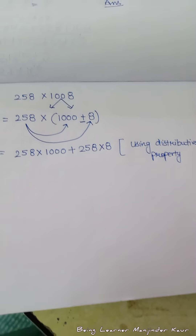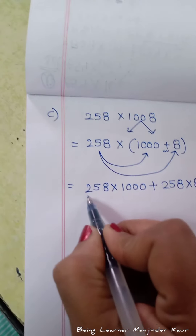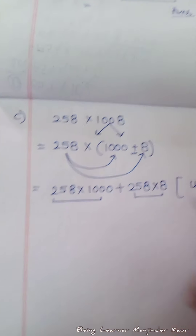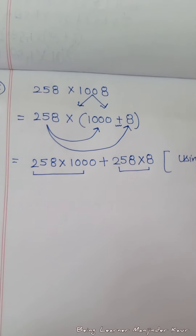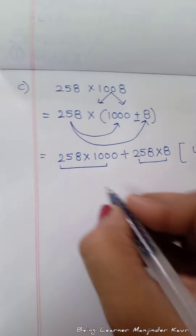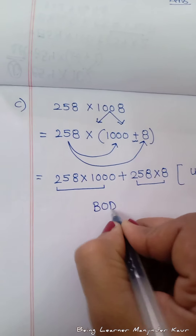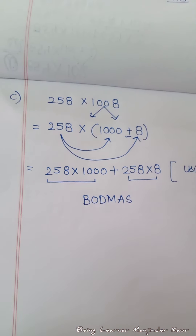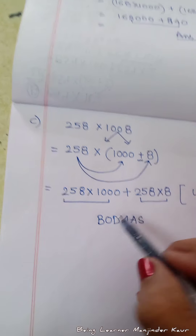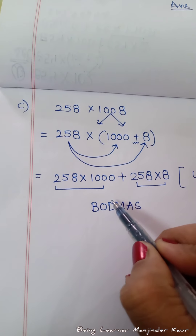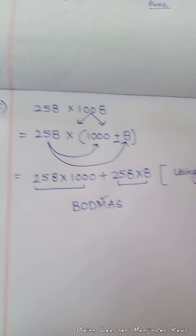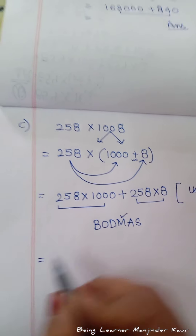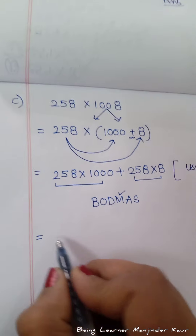अब सबसे पहले मैं multiplication करूँगी। आप लोग सोच रहे होंगे क्यों multiplication करेंगे? क्योंकि हम लोगों ने BODMAS के बारे में पढ़ा हुआ है already। हमारे पास bracket done हो गया है, division का sign नहीं है — तो सबसे पहले हम लोग multiplication करेंगे। यह सबसे easy multiplication होती है।